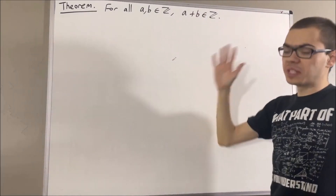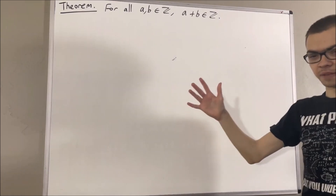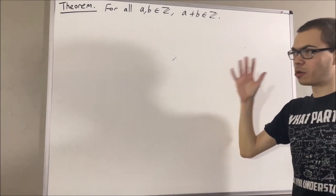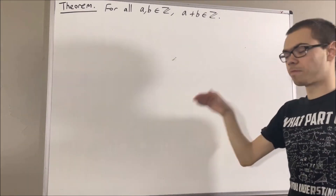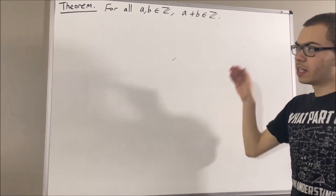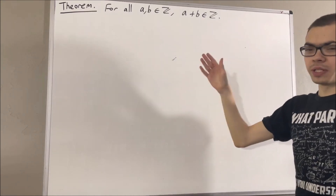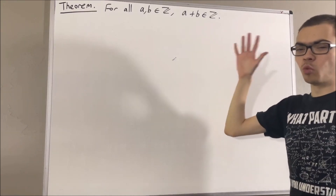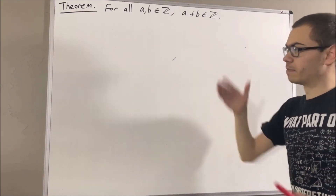In this series, we are using a list of 10 axioms for the real number system, and I'll leave that list of axioms in the description below. We are going to be using axioms 1, 4, and 5 in this video.